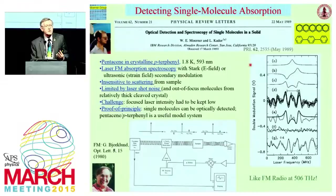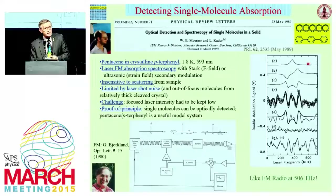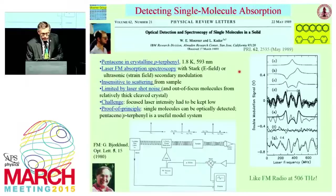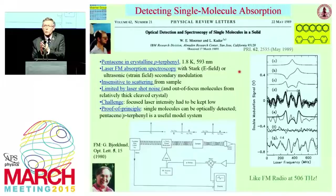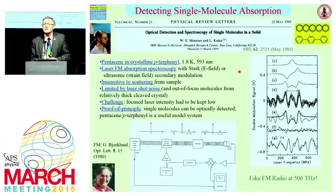So in 1989, with Lothar Kador, we pushed FM spectroscopy — invented by Gary Bjorklund a few years earlier — to the single molecule limit. The FM gives you two copies of the spectral feature of opposite sign, and we used a modulation method to remove technical noise, looking for a W shape, which we saw for penicine in peritrophenyl. This is a measurement of absorbed transmitted light, insensitive to scattering from the sample. It is limited by laser shot noise, and since we had to avoid saturating the molecules, we couldn't turn the intensity up high. Nevertheless, this experiment showed that penicine in peritrophenyl is an important model system for single molecule experiments.